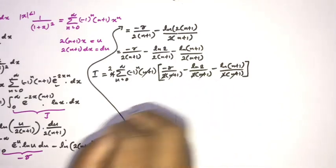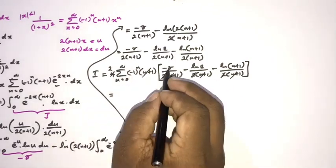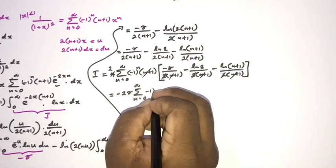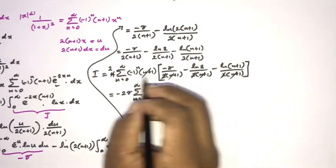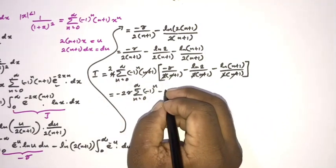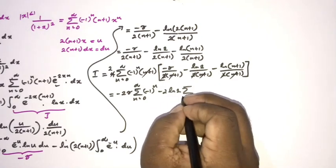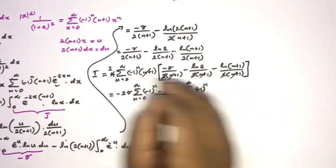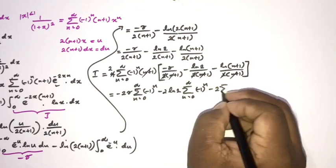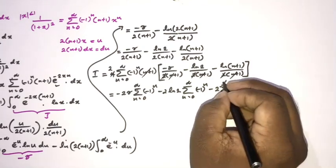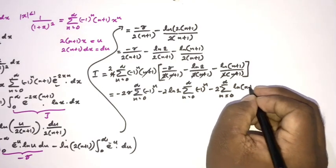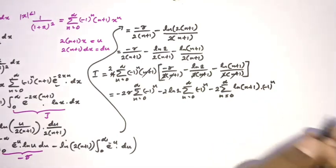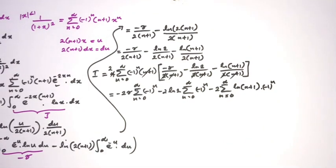Substituting J back and simplifying (the (n+1) and factor of 2 cancel with the outer 4), the integral I becomes: −2γ · Σ(n=0 to ∞)(−1)ⁿ  − 2ln2 · Σ(n=0 to ∞)(−1)ⁿ  − 2 · Σ(n=0 to ∞)(−1)ⁿ ln(n+1).